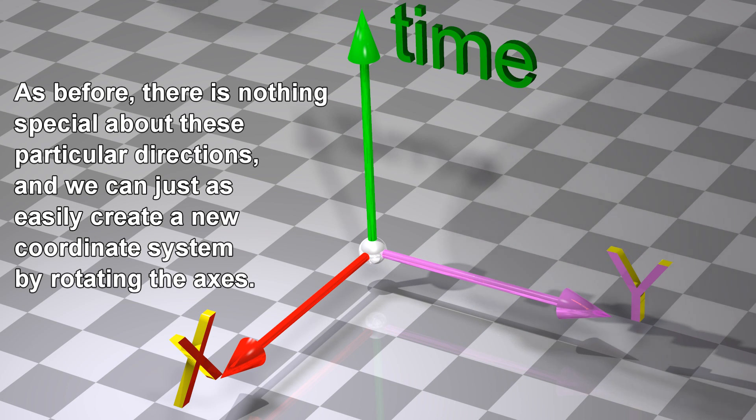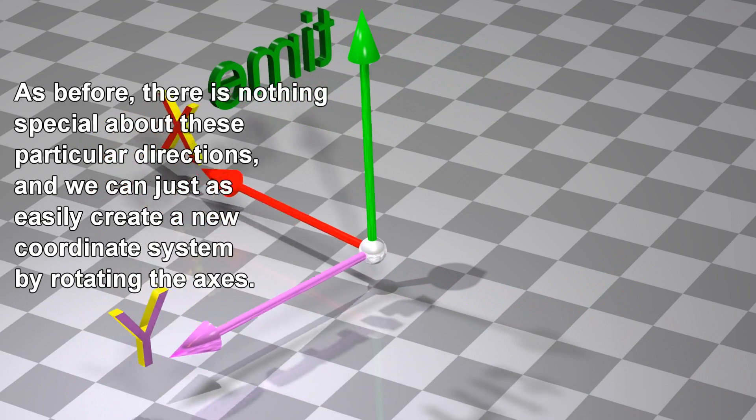As before, there is nothing special about these particular directions, and we can just as easily create a new coordinate system by rotating the axes.